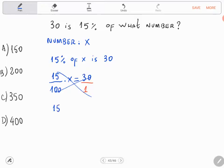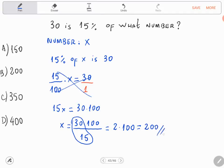And we will get 15x equal to 30 times 100. Divide both sides by 15. And if we divide 30 by 15, we get 2 times 100, and our answer is 200. It's our answer, letter B.